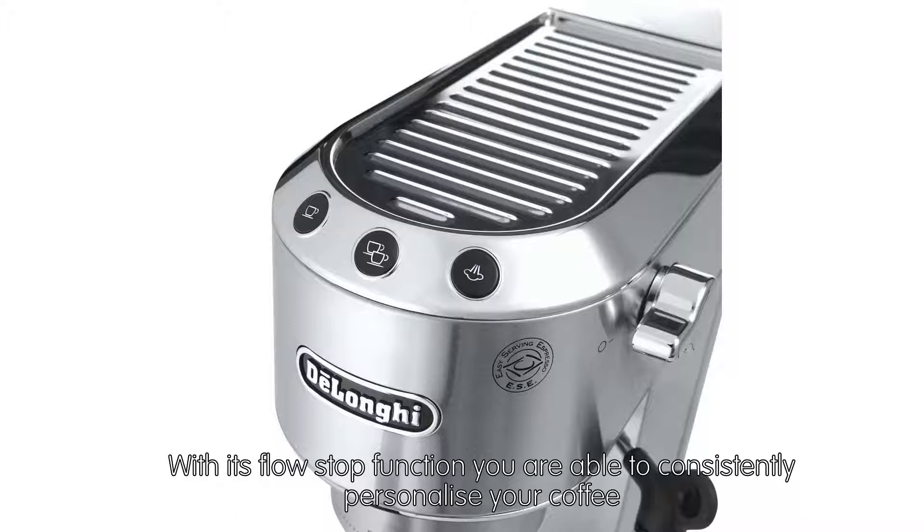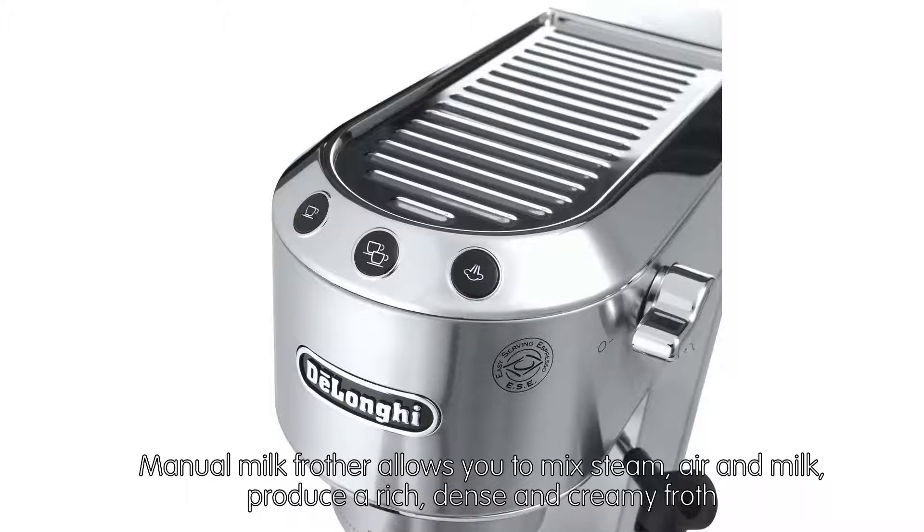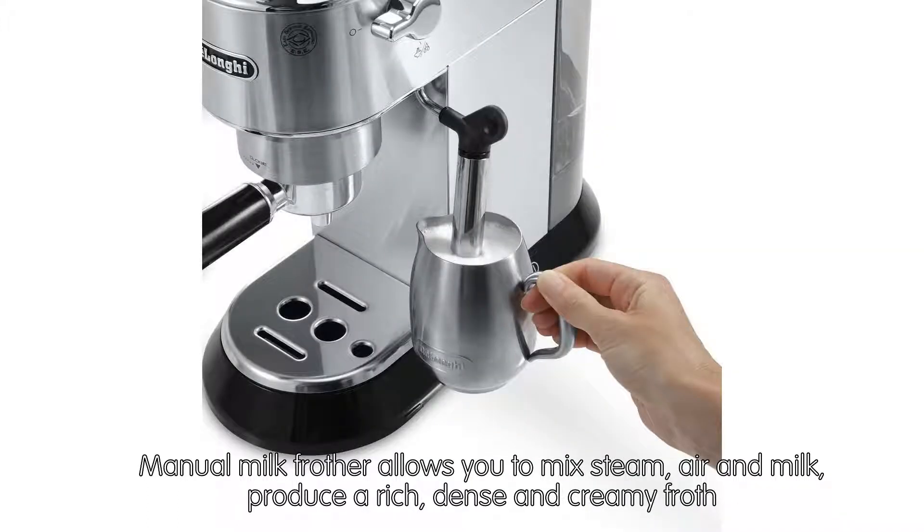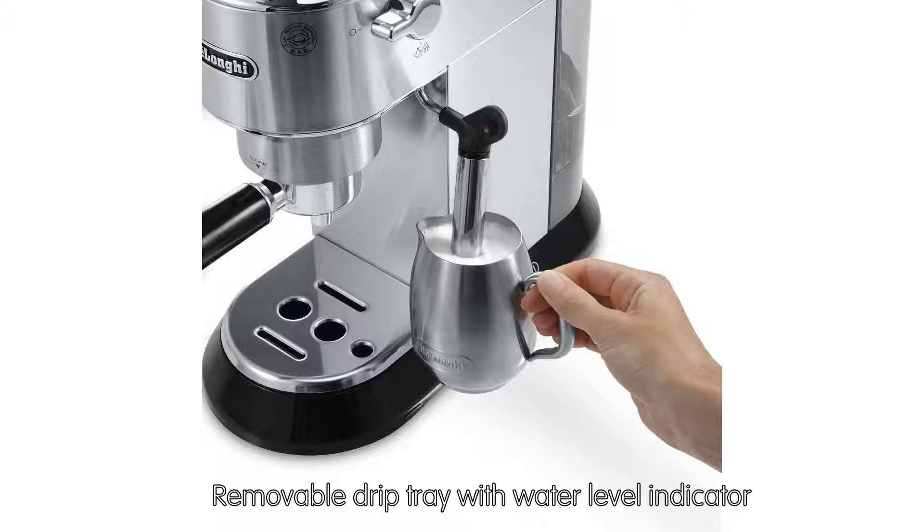With its flow stop function, you are able to consistently personalize your coffee. The manual milk frother allows you to mix steam, air, and milk to produce a rich, dense, and creamy froth. It has a removable drip tray with water level indicator.